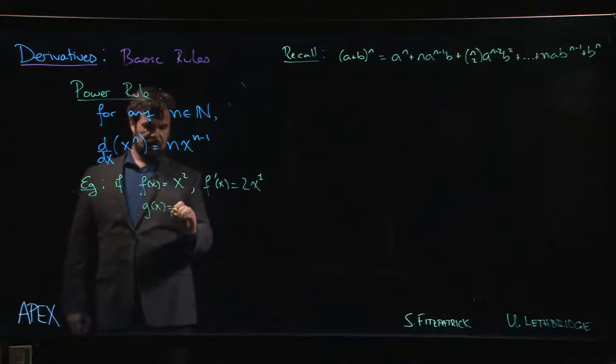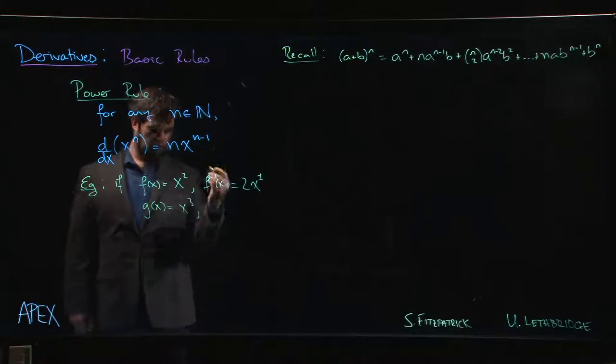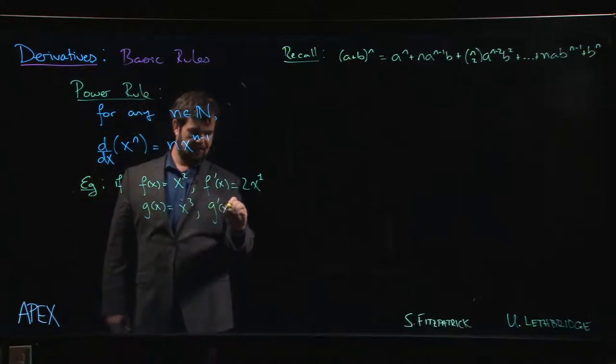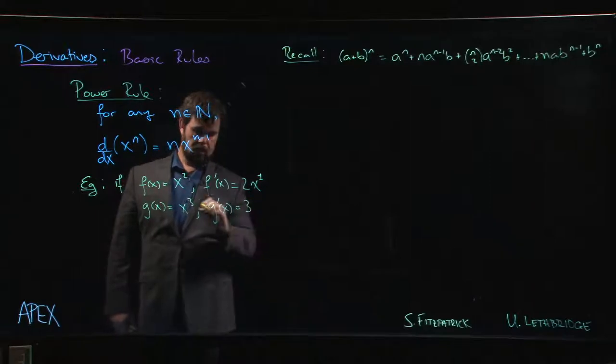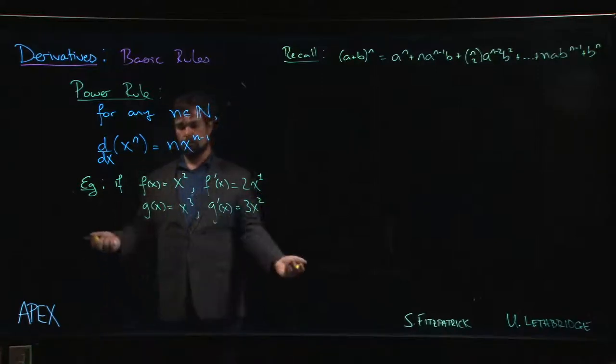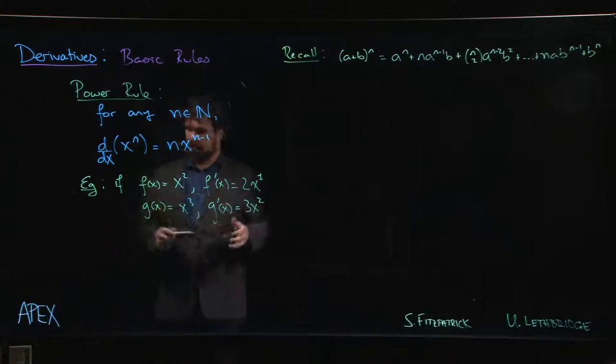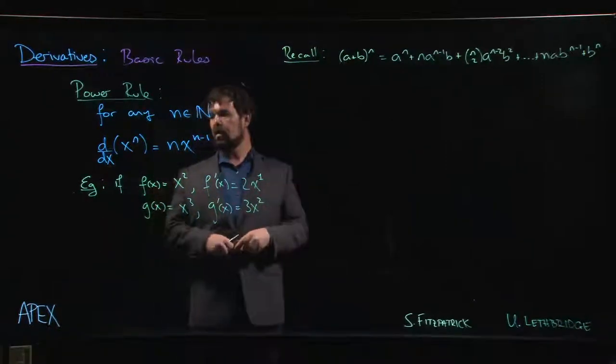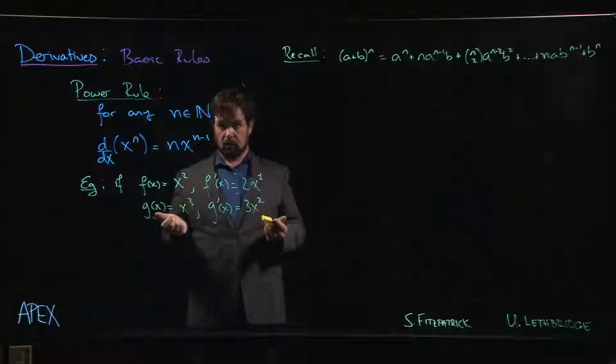If g of x is equal to x cubed, just so we see one more, g prime, 3 comes down in front. We subtract 1 from the exponent, 3 minus 1 is an exponent of 2, and so on. So we can quickly take the derivative of any power function once we know this rule is true.